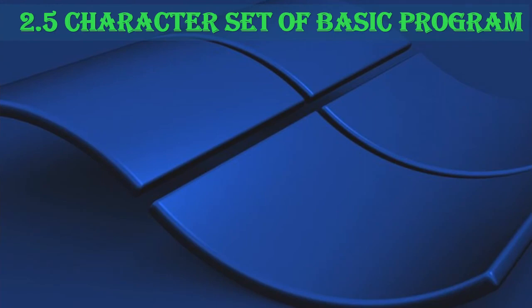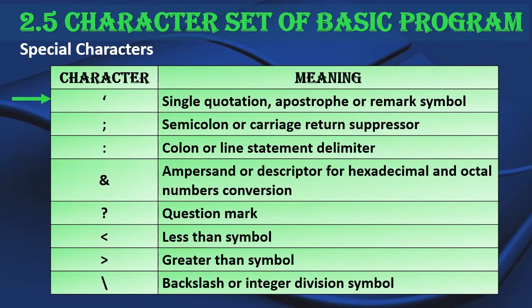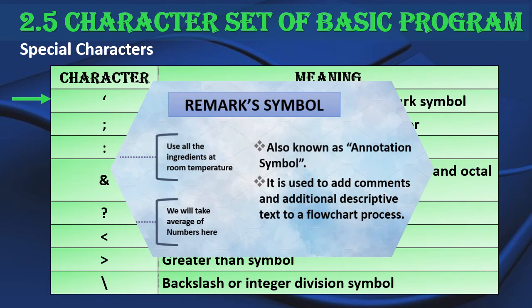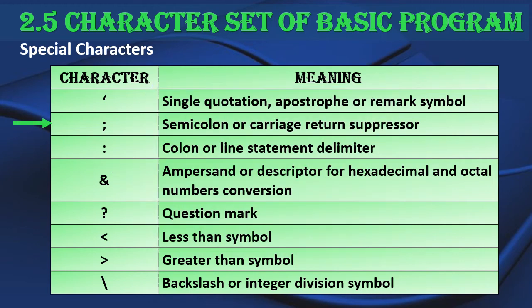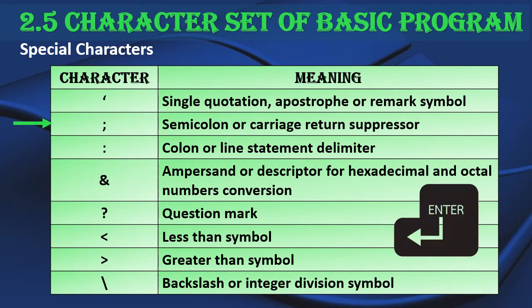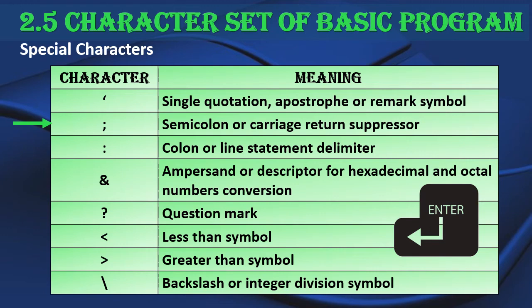The list continues with more special characters. The single quotation mark, also called apostrophe or remark symbol, is used to give additional descriptive text in a program. Semicolon is called the carriage return suppressor — carriage return is the enter key, and using semicolon avoids moving to the next line. The colon is the line statement delimiter, meaning it allows two statements to be written on a single line with the colon sign in between.